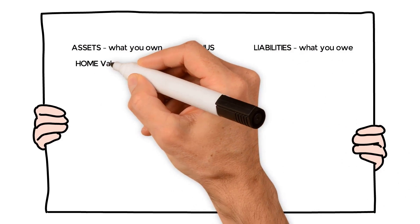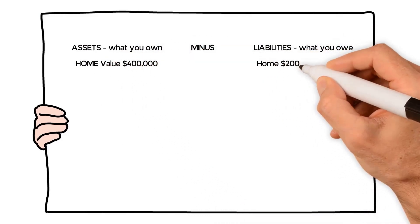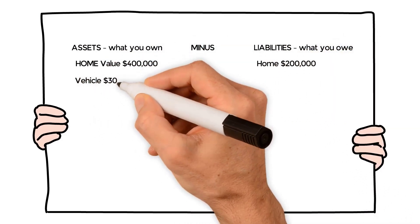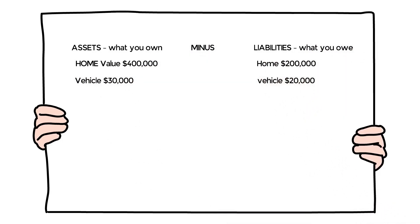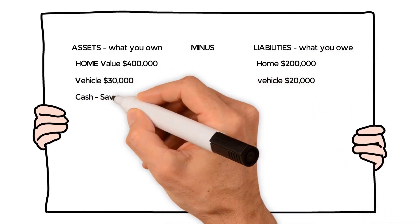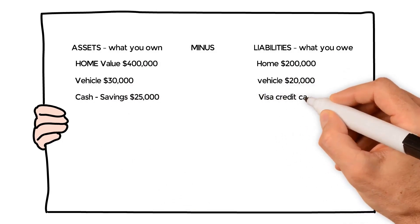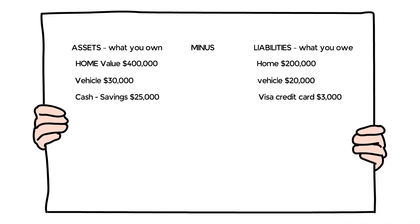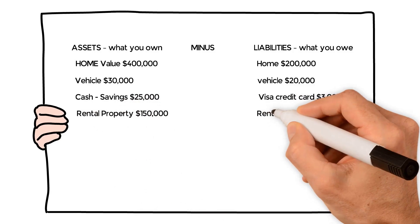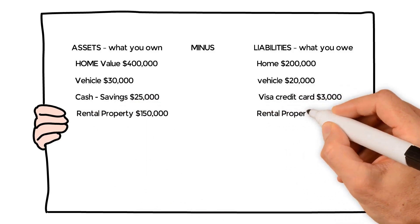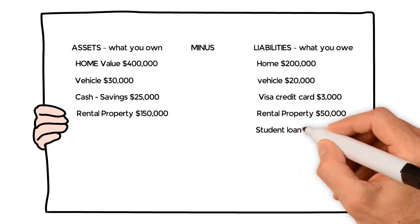Home value: $400,000. Home loan: $200,000. Vehicle: $30,000. Vehicle loan: $20,000. Cash savings: $25,000. Visa credit card: $3,000. Rental property: $150,000. Rental property loan: $50,000. Student loans: $12,000.